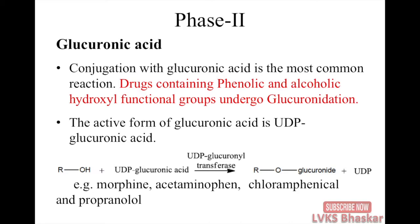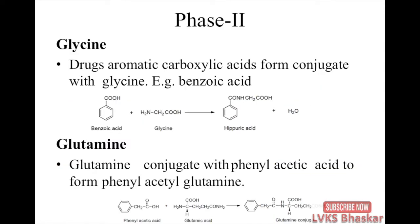The conjugation of glucuronic acid is the most common phase 2 reaction. Drugs containing phenolic and alcoholic hydroxyl functional groups undergo glucuronidation. The active form of glucuronic acid is UDP-glucuronic acid. Examples are morphine, acetaminophen, chloramphenicol, and propranolol. Drugs containing aromatic carboxylic acids form conjugates with glycine — for example, benzoic acid. Glutamine conjugates with phenylacetic acid to form phenylacetyl glutamine.